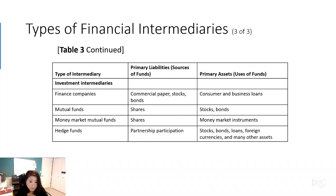The second type of investment intermediary is mutual funds. They acquire funds by selling shares to many individuals, then use the proceeds to purchase a diversified portfolio of stocks and bonds. If you buy a mutual fund, you get an index that combines shares of, say, health stocks and tech stocks. Every investor's money is pooled together to invest in the fund, and if the mutual fund price goes up, you gain more.